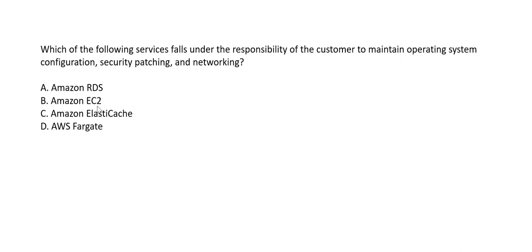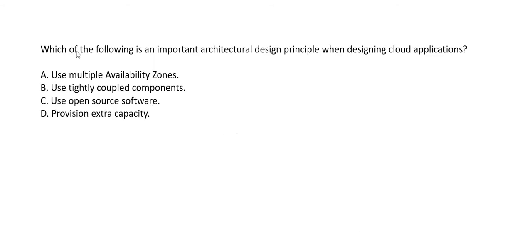When we talk about maintaining operating system configuration and security patching, EC2 is where the customer is responsible. RDS is an AWS managed service, so the customer doesn't handle configuration or security patching there — same with ElastiCache and Fargate. Hence option B, EC2, is the right answer.